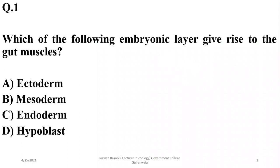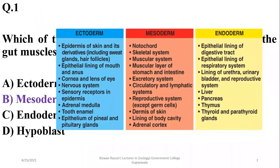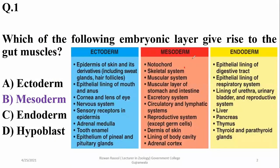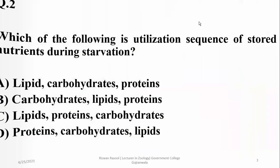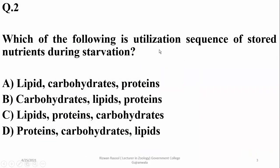Wherever muscles are found, they are developing from mesoderm. So the right option is beta. All types of muscles — skeletal or the muscular layer of the stomach — they are developing from the mesoderm layer. Question number two: which of the following is the utilization sequence of stored nutrients during starvation?